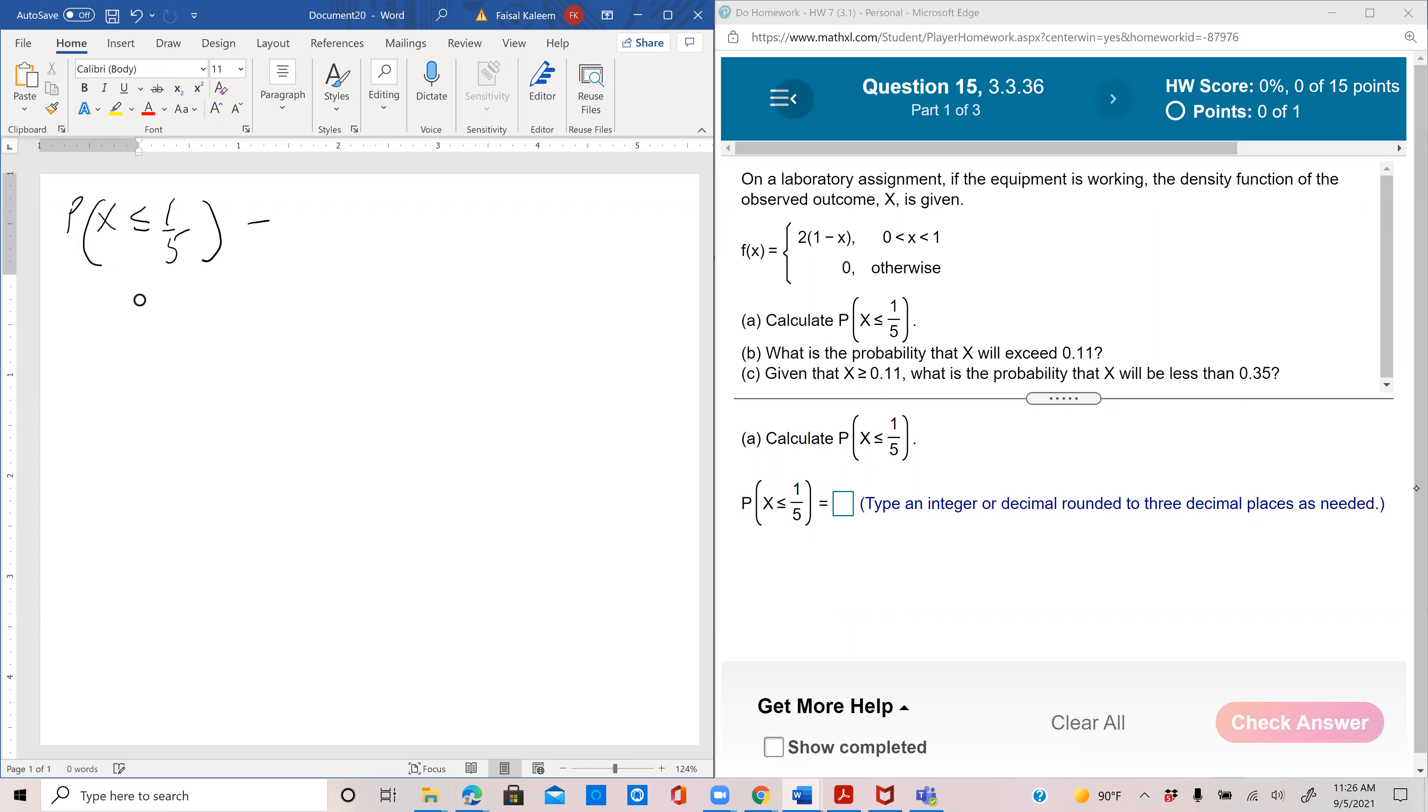is just the integral from negative infinity to one-fifth of the probability function. So you don't have anything from negative infinity to zero, so basically it would be from zero to one-fifth, and over there the function would be two times one minus x.